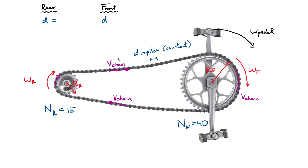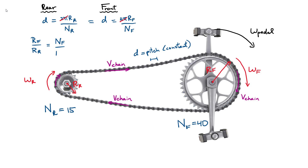The pitch d has to be the same for the front and the rear. In the rear, you'd calculate the pitch as 2π times the radius of the rear divided by the number of teeth N_R. This must equal the pitch in the front: 2π times R_F divided by N_F. Since those are equal, you get a nice relationship: the radius of the front divided by the radius of the rear must equal the ratio of the number of teeth in those sprockets — R_F / R_R = N_F / N_R. Go ahead and box that. This is going to be an important relationship.